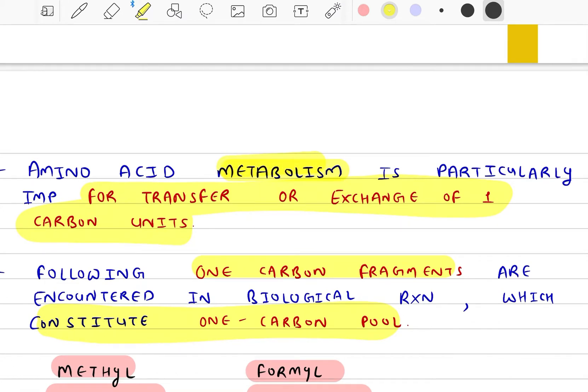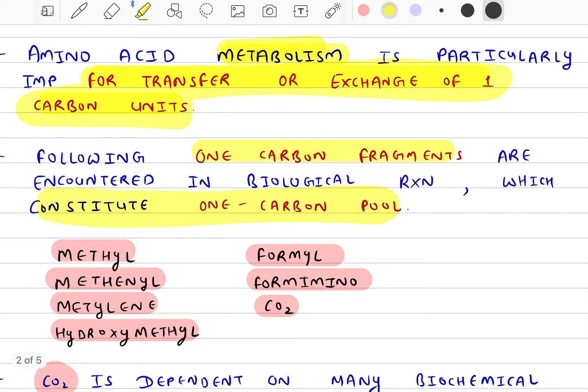Amino acid metabolism is particularly important for transfer and exchange of one carbon units. Following one carbon fragments are encountered in biological reactions which constitute the one carbon pool.